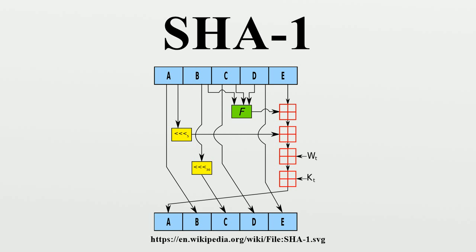SHA-1 produces a 160-bit hash value known as a message digest. A SHA-1 hash value is typically rendered as a hexadecimal number, 40 digits long.